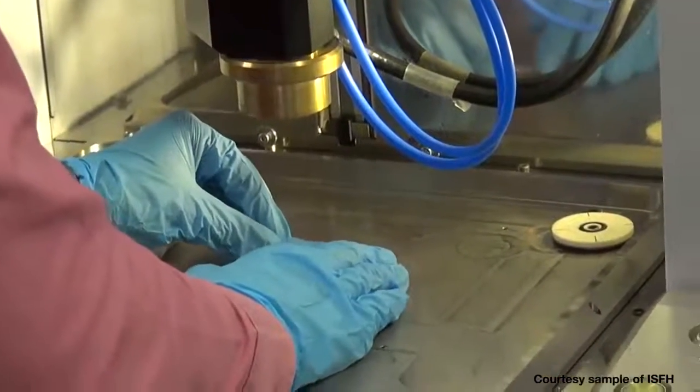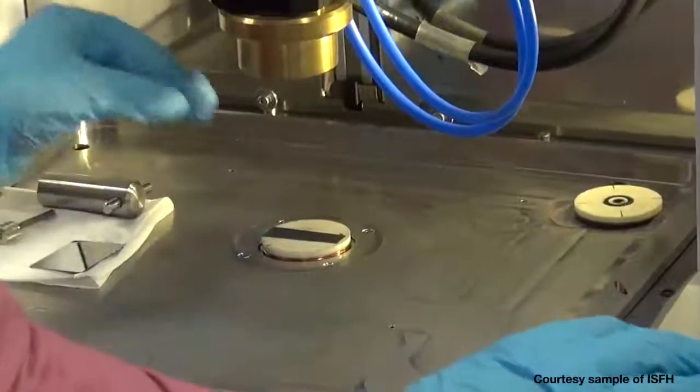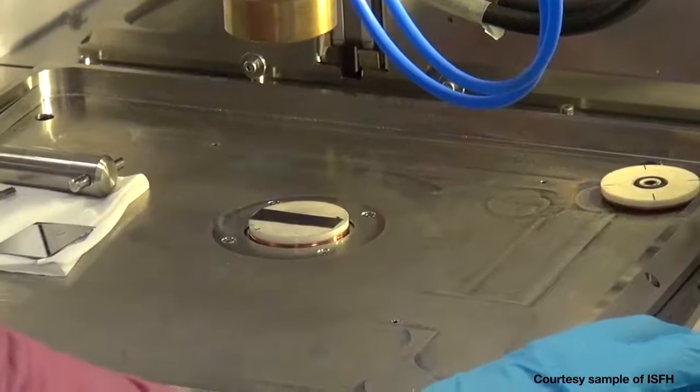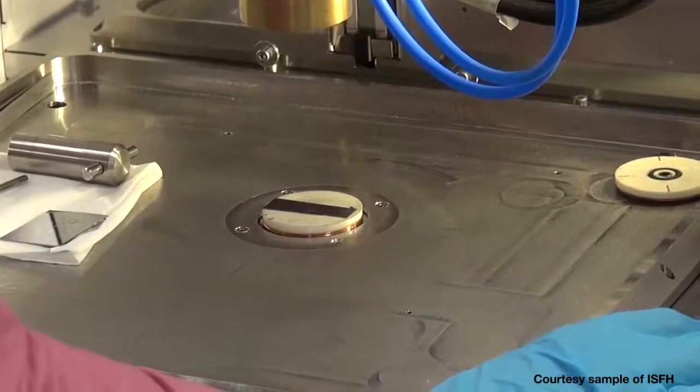One button press and primary vacuum is made, holding the sample in place. A second button press lowers the applicator on the back of the sample.